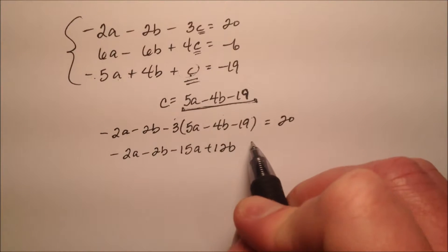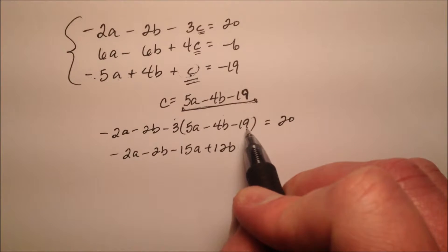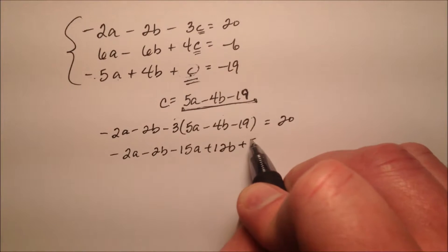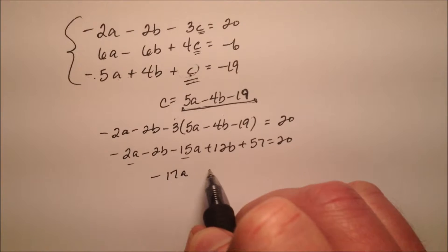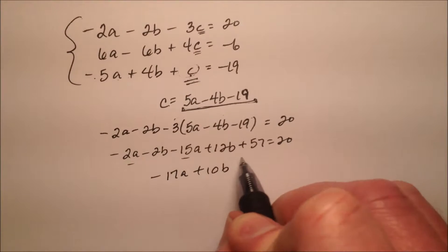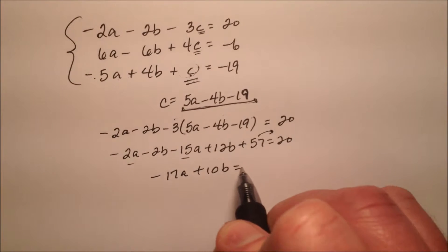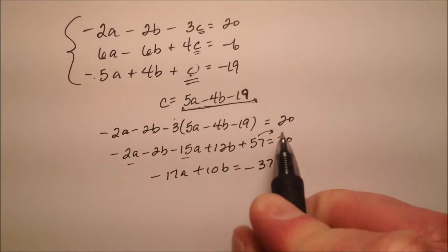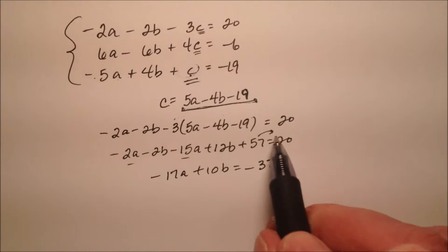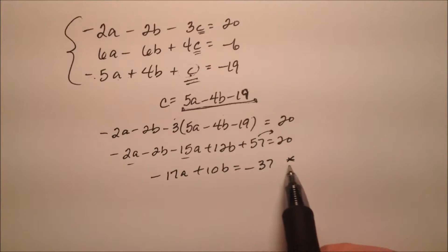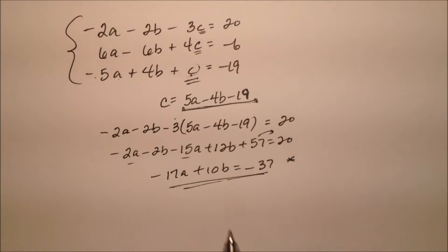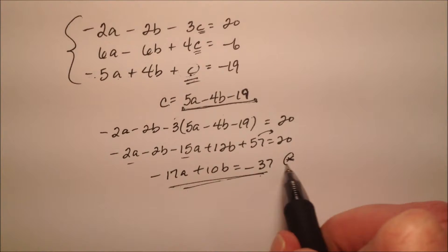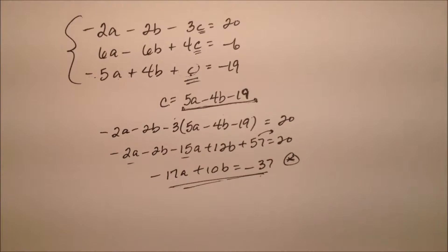And then 19 times 3 is the same as 20 times 3 minus 3, so that will be a 57, and then my a's can go together, my b's can go together, and I'm going to dump that 57 on the other side, so it will be a negative 57, so 20 minus 57 will be this negative 37. So I have negative 17a plus 10b equals negative 37, and this is going to be an equation that I'm going to come back to here in a moment.